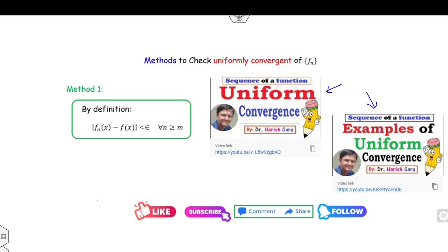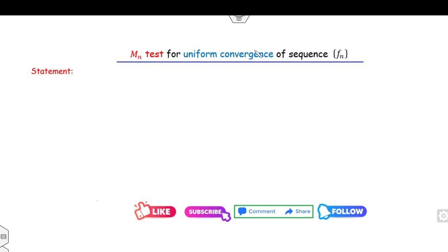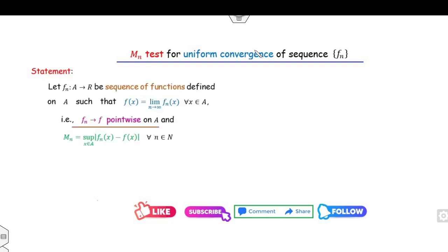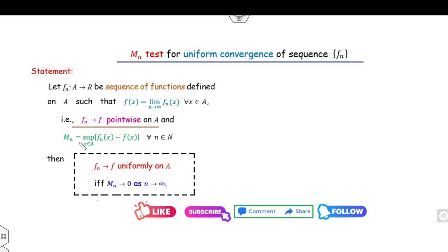In today's lecture I will explain how the MN test is useful for finding uniform convergence of a sequence. The statement of the MN test is: if you have a sequence of functions fn defined on a domain A, a subset of ℝ, such that fn converges to f(x) pointwise, and MN is defined as the supremum of |fn(x) − f(x)|, then fn converges to f uniformly if and only if MN converges to zero as n approaches infinity.